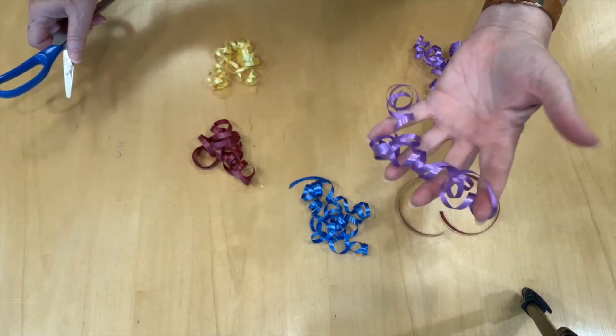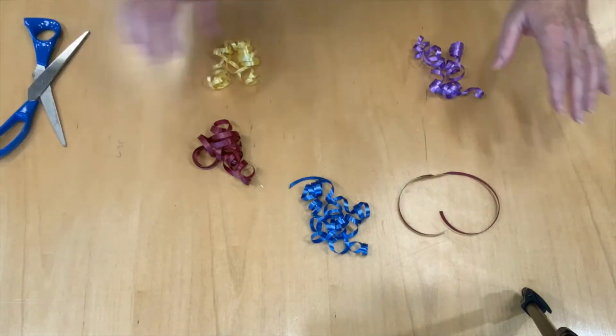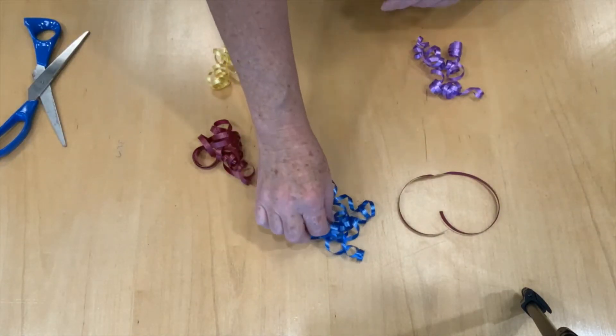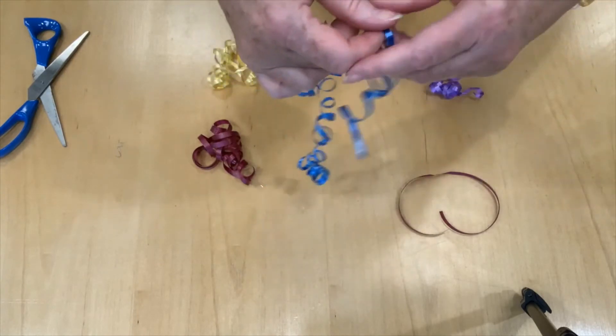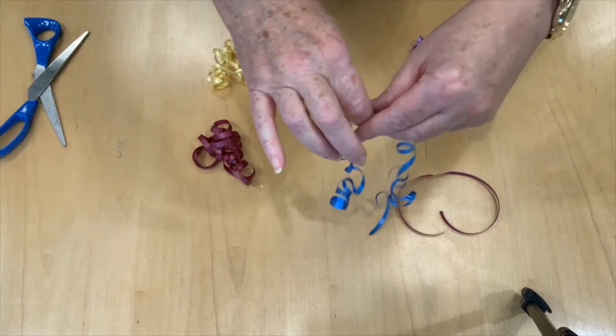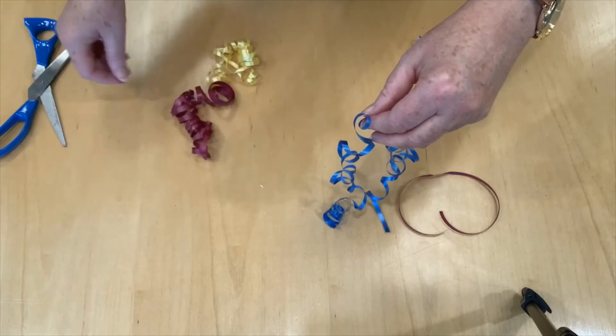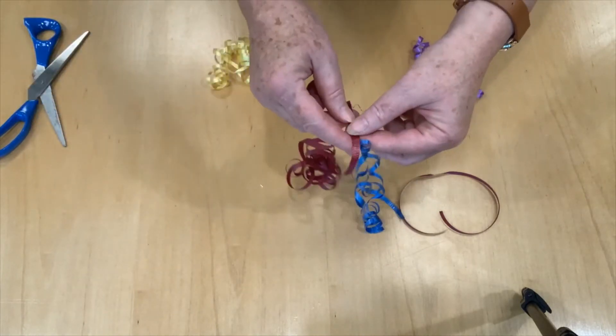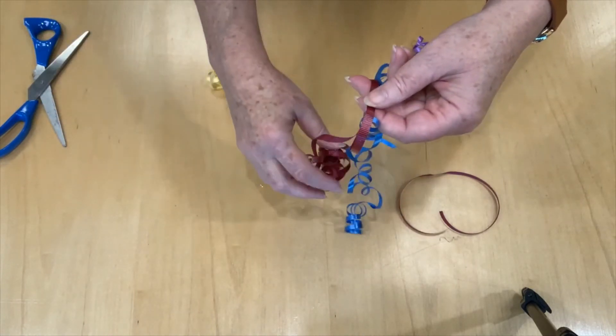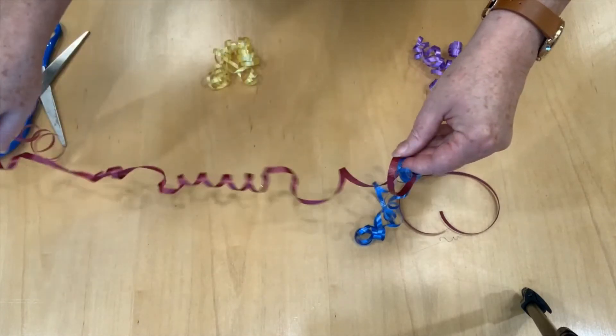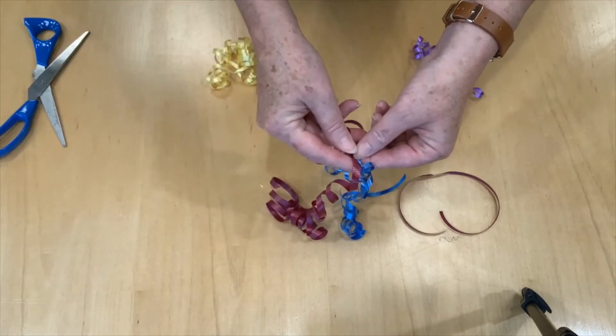So what we're going to do is take our curled ribbon, find roughly a center point for each one. And that's not the center point. Let's try it. There we go. The center point of each one.